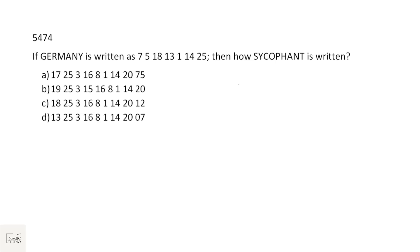If GERMANY is written as a certain code — we can see these are the position numbers in the English alphabet: A=1, Y=25, E=5. How is PSYCHOPATH written? T is 20, and there is only one option ending with 20. You can check: S=19, Y=25, C=3. Option B fits in.